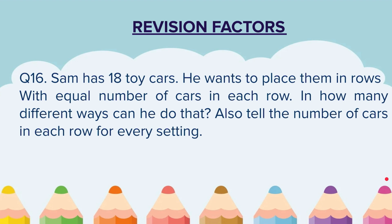Question 16: Sam has 18 toy cars. He wants to place them in rows with equal number of cars in each row. In how many different ways can he do that? Also tell the number of cars in each row for every setting. This brings us to the end of these questions. I hope you have attempted every question and noted down your answers. If this video was of use to you, do like it and share it with your friends. For the answers, watch out the comments section.